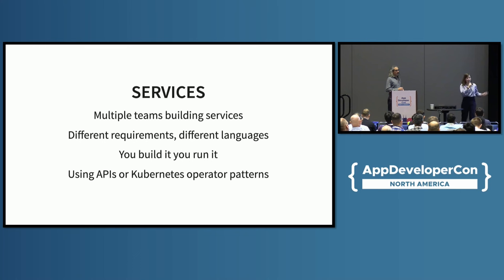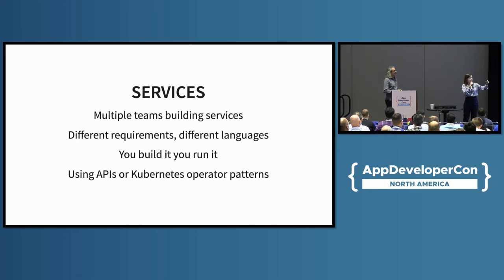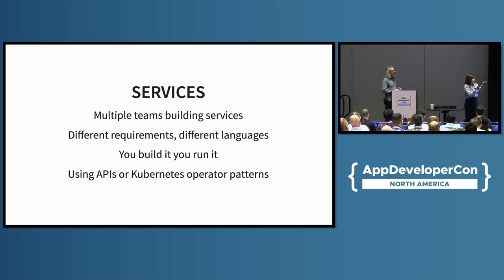We are a big company with a big product, so we have multiple teams building services. We have different requirements, different languages — Go, Java, Bash, and more. The rule is: if you build it, you run it and you own it. Of course, we also use some internal contracts like APIs or Kubernetes operator patterns, so we have an internal agreement across teams.